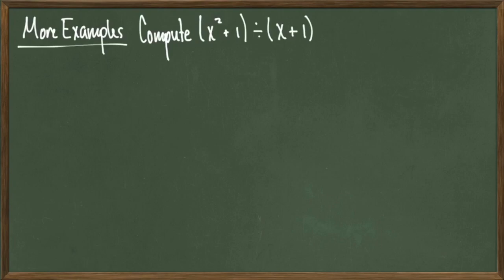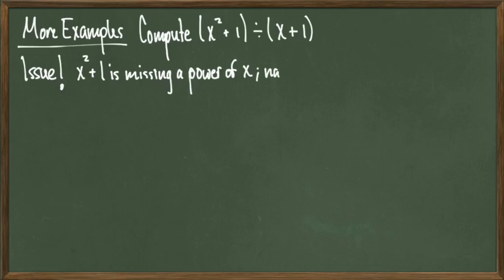For instance, in the previous example, we had an x squared term, we had an x to the 1 term, and we had a constant term. In this problem, we have an x squared term and a constant term, but we don't have x raised to the first power, which poses a problem for us.